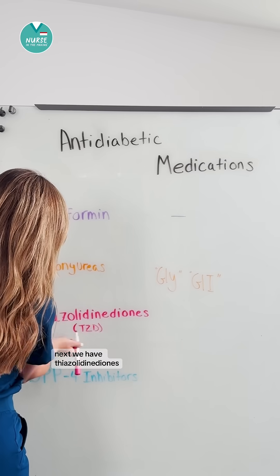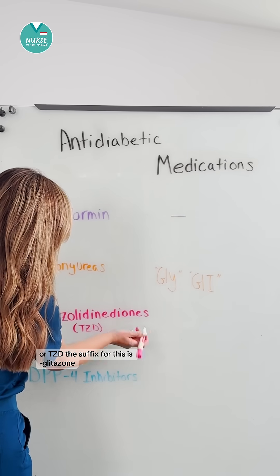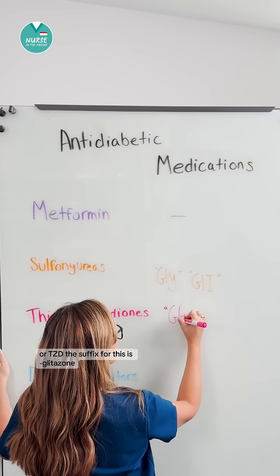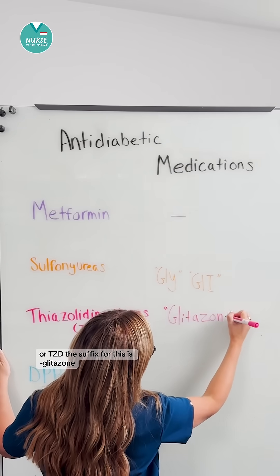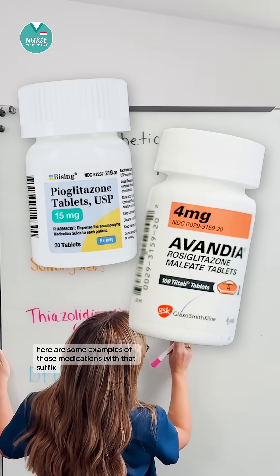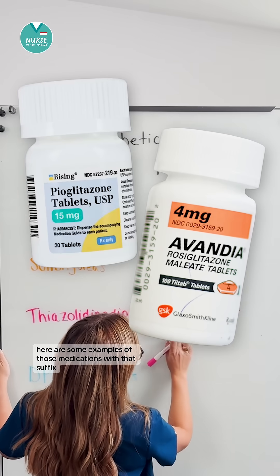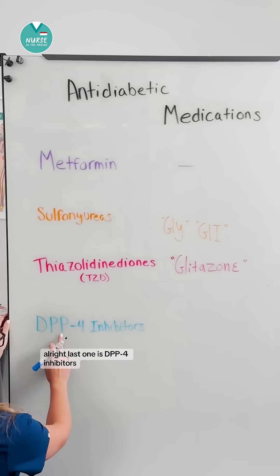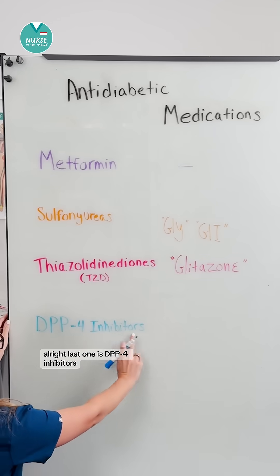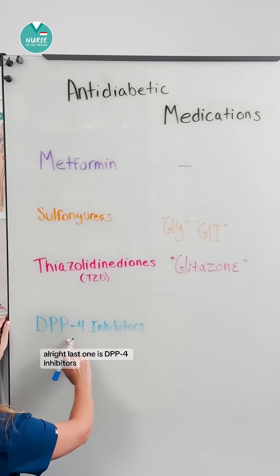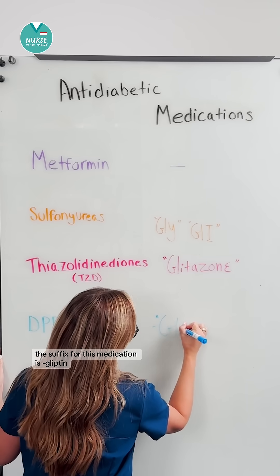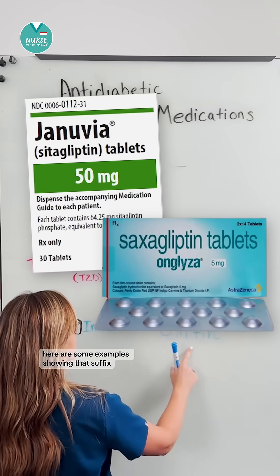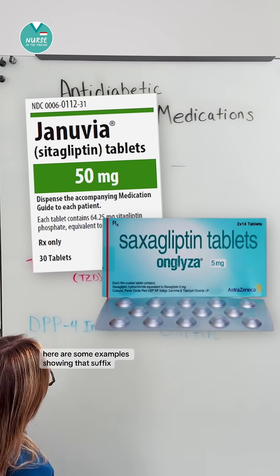Next, we have thiazolidinediones, or TZD. The suffix for this is 'glitazone'. Here are some examples of those medications with that suffix. Last, we have DPP4 inhibitors. The suffix for this medication is 'gliptin'. Here are some examples showing that suffix.